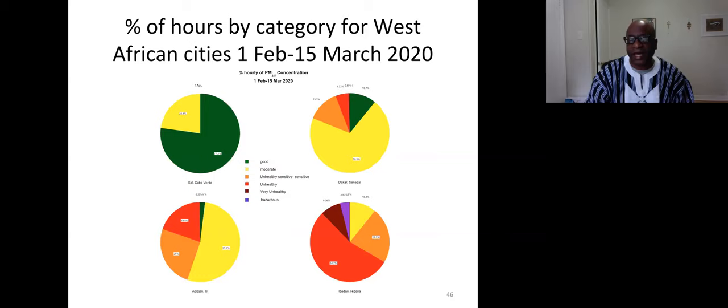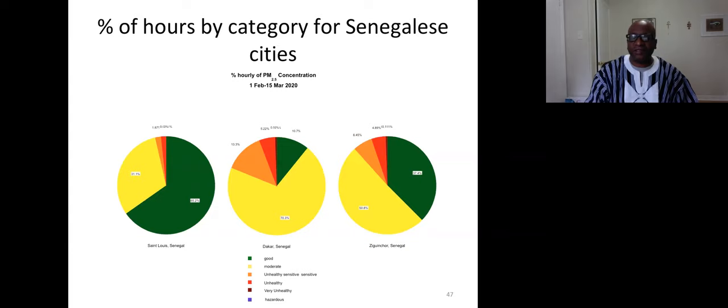If we look at Sal, which is in Cape Verde, Dakar, Abidjan, and Ibadan during this period, we would typically say that, hey, the air quality has been very good in Cape Verde, so it should be less of a factor in driving comorbidities. But if we start looking at Dakar, Abidjan, Ibadan, the air quality has not been good in these locations. Dakar has certainly been better from the 1st of February through the 15th of March because we saw a big change in circulation which reduced the amount of dust.